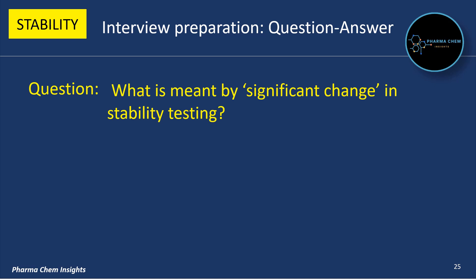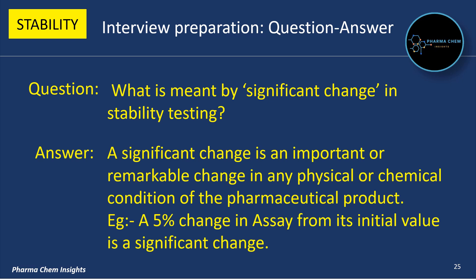Next question: What is meant by significant change in stability testing? A significant change is an important or remarkable change in any physical or chemical condition of the pharmaceutical product. For example, a 5% change in assay from its initial value is considered a significant change.